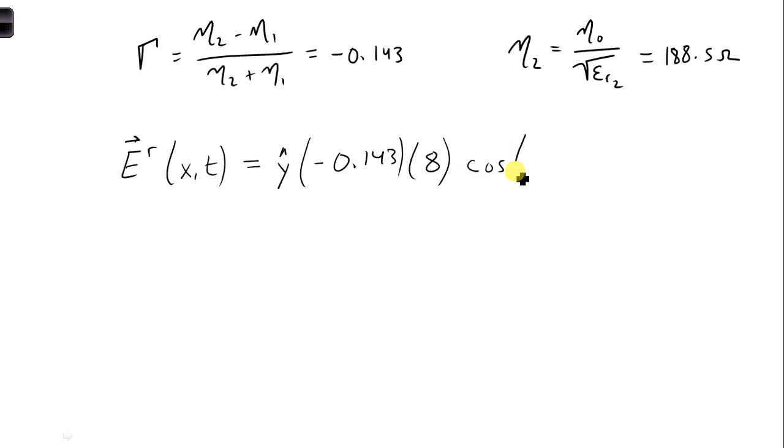And then we have cosine omega t. Omega is not changing. We're in the same material. We have the same frequency. So we have 6 pi times 10 to the 9th t.